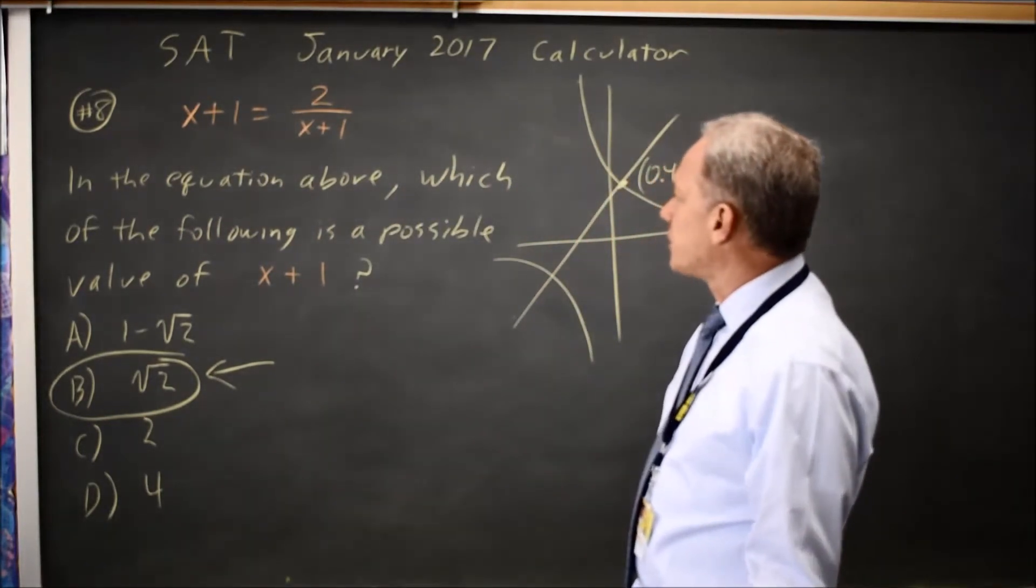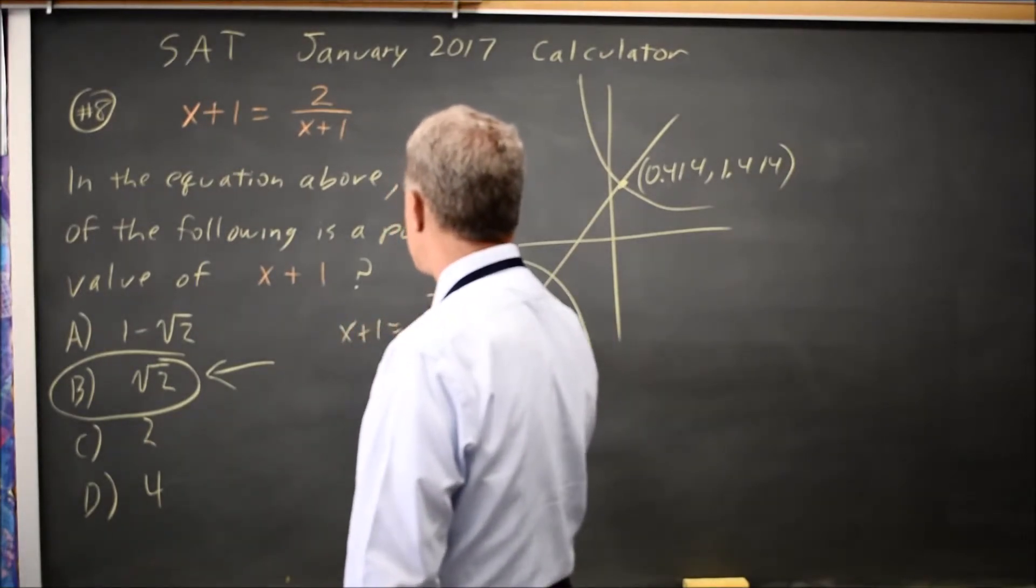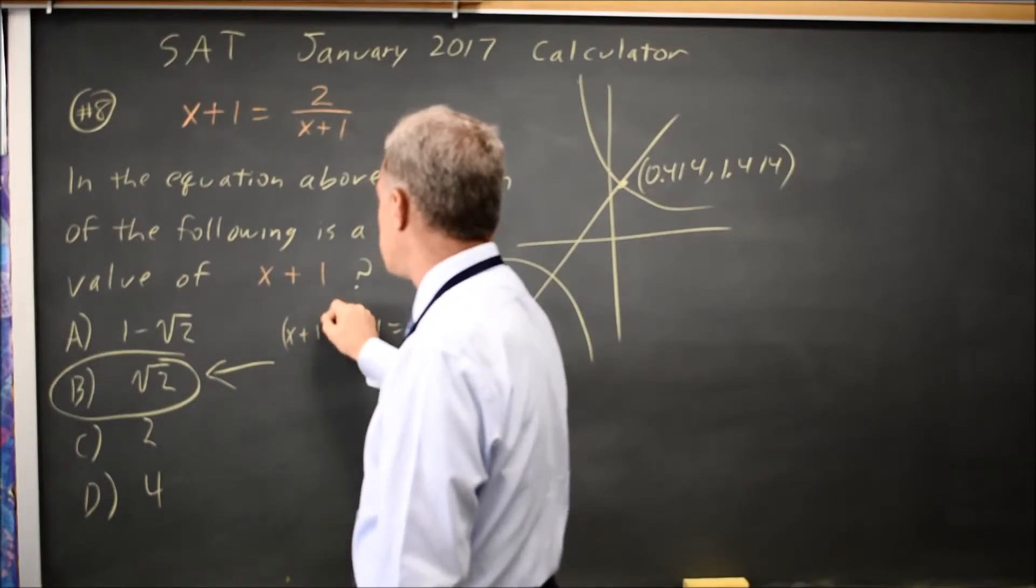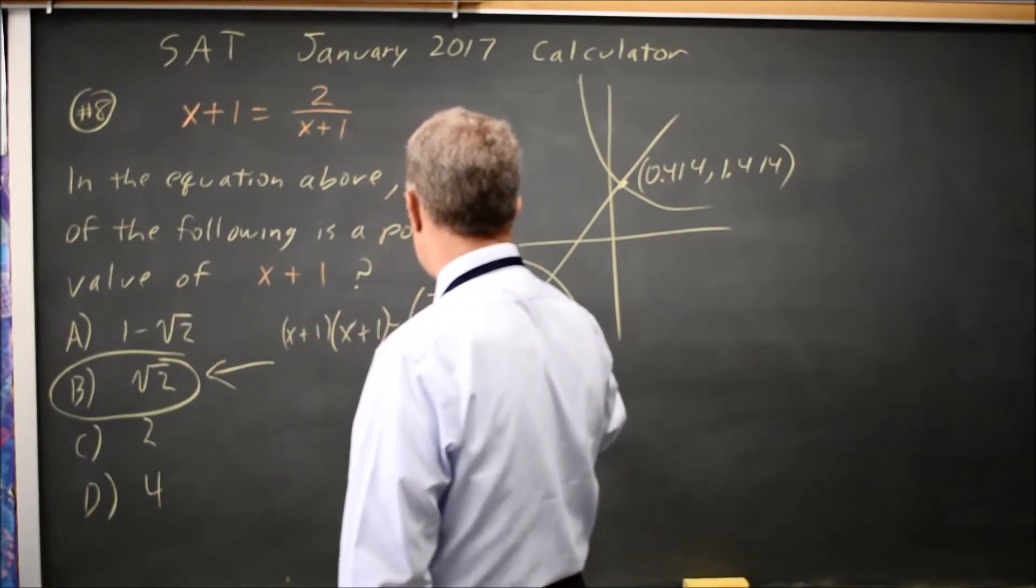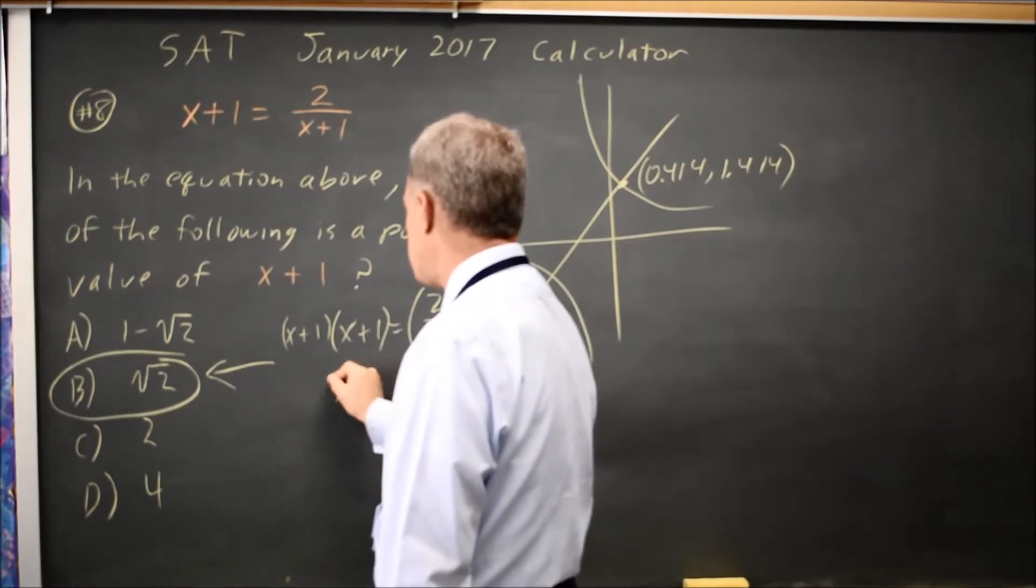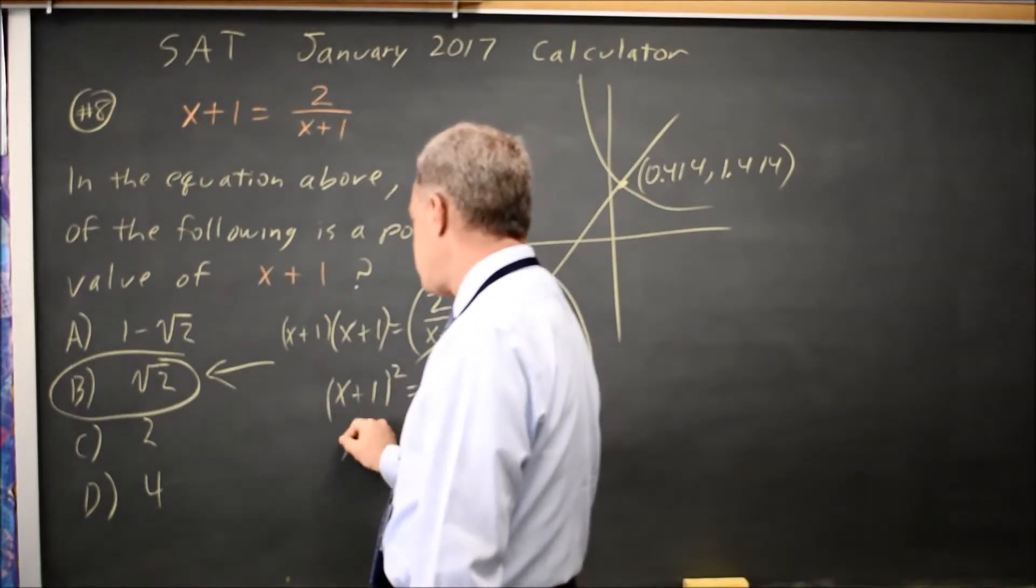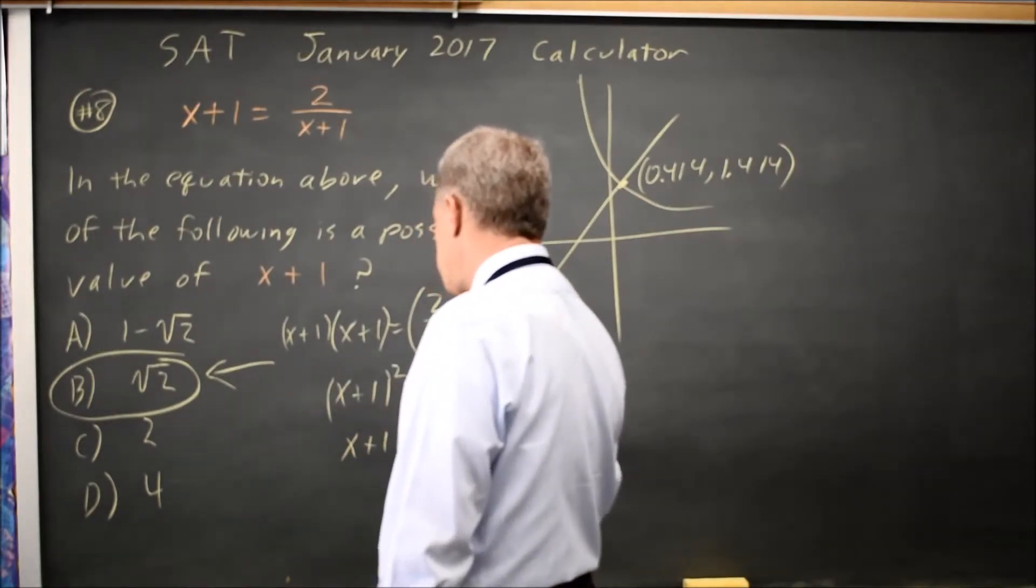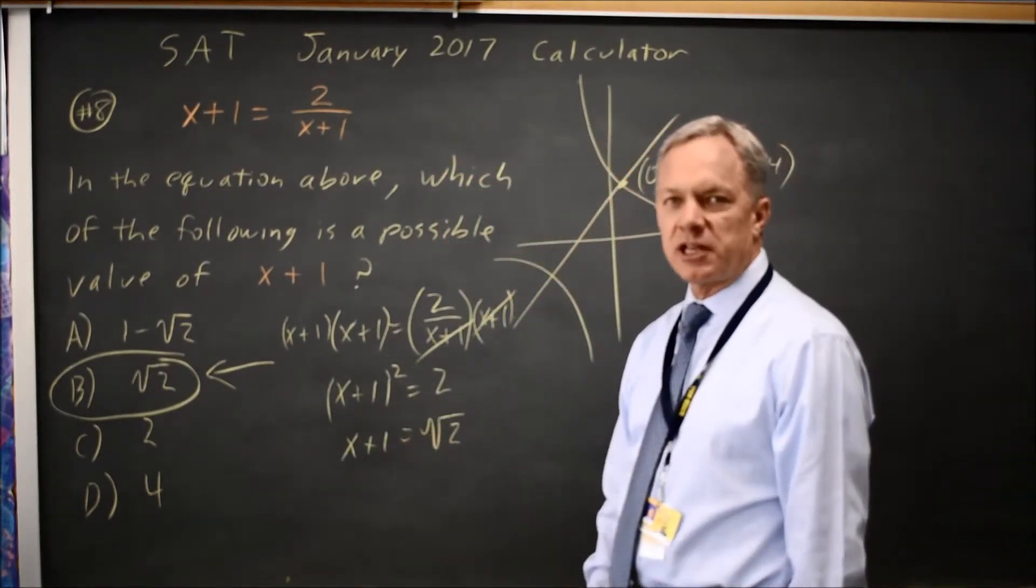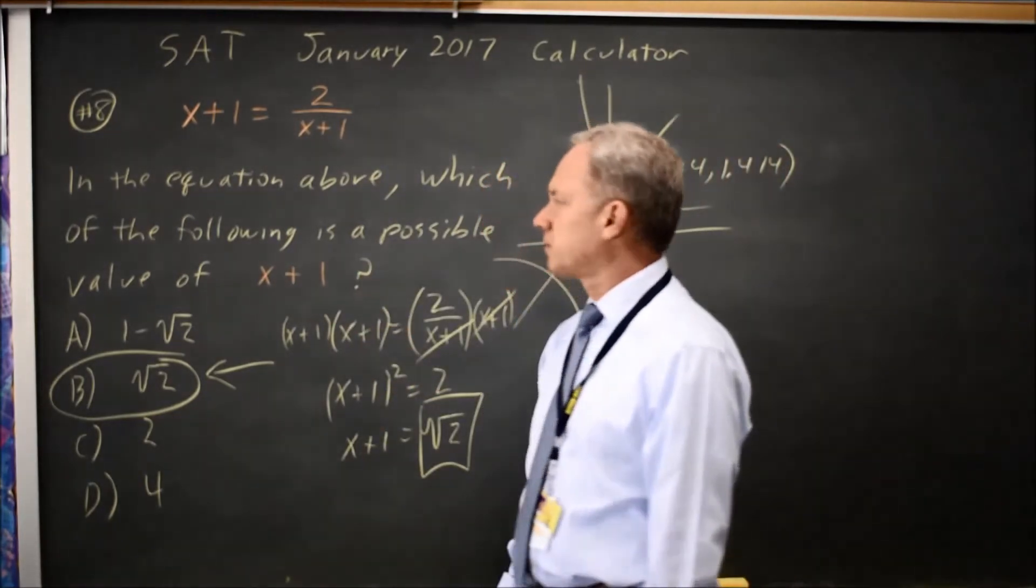We can also solve it algebraically. x plus 1 equals 2 over x plus 1, multiply both sides by x plus 1. x plus 1 over x plus 1 is 1, so I get x plus 1 squared equals 2. If I square root both sides, I get x plus 1 equals square root of 2. I don't have to subtract 1 from both sides because they're not asking for x, they're asking for x plus 1, so that is my answer. That's the same answer I got before.